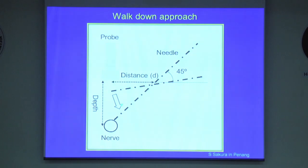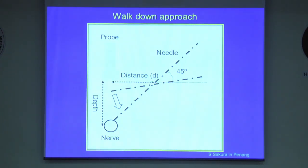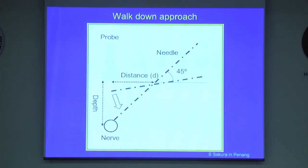First, you measure the depth of the target, and then insert a needle as far away from the transducer as the depth, and advance it at a shallow angle at first, then gradually increase the angle until 45 degrees, so that you could visualize the needle tip on the nerve.